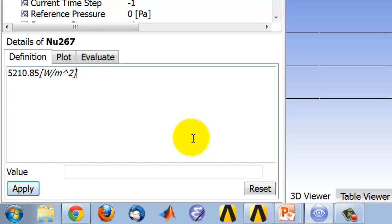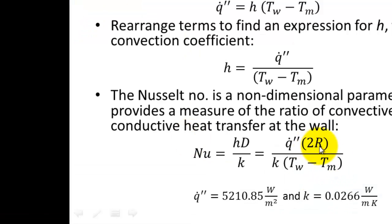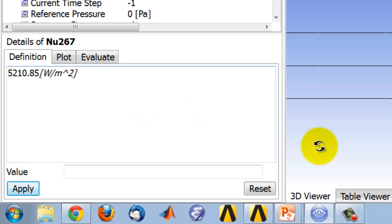And then I have 2 times the pipe radius, 0.0294, and the unit is meters.